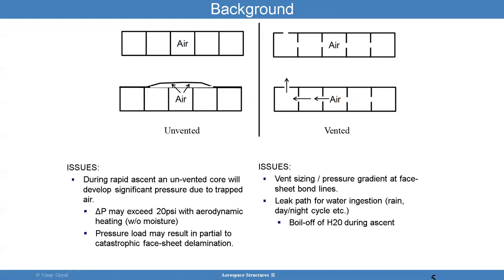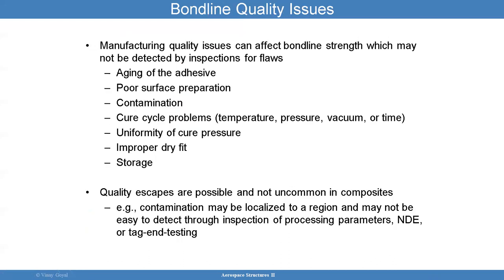The phenomenon that everybody is concerned about with unvented honeycomb core is really the quality of the face sheet bond line. Manufacturing quality issues can affect bond line strength, which may not be detected by inspection. Issues you can see typically in bond lines include aging of adhesive, poor surface preparation, contamination, cure cycle problems, uniformity of cure pressure, improper dry fit, and storage condition issues. Quality escapes can also be an issue and they're not uncommon in composites.